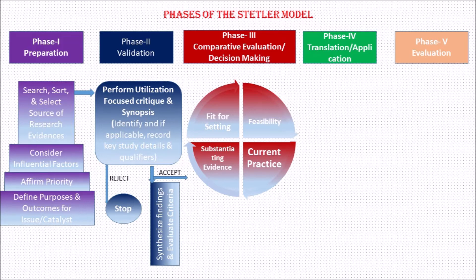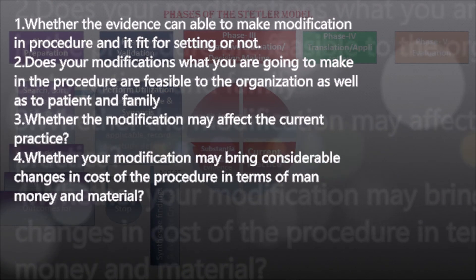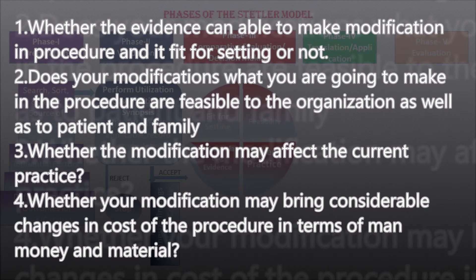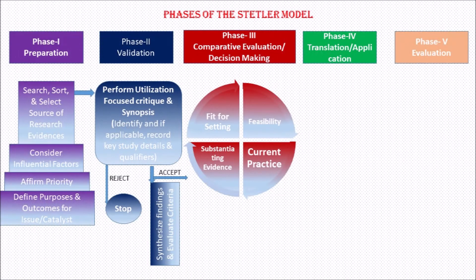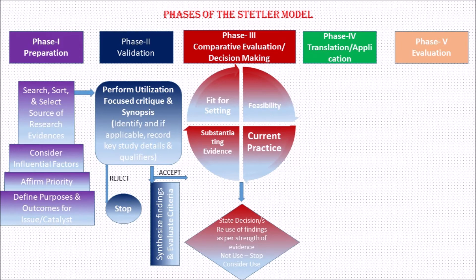Phase 3 is Comparative Evaluation and Decision Making — a crucial step where you decide whether to apply or modify a procedure based on the following factors: whether the evidence can make modification in procedure and it fits the setting; whether the modifications are feasible for the organization as well as for the patient and family; whether the modification may affect current practices; and whether the modification may bring considerable changes in the cost of the procedure in terms of man, money, and material. After analyzing all these factors, take a firm decision on implementation or modification of the current procedure.